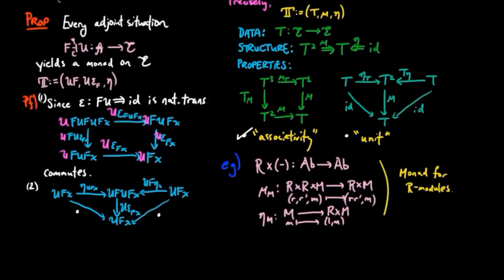And in fact, they do. And it comes from the triangle identities for the adjoint situation. For the left triangle, we have U epsilon FX precomposed by UF FX. And that is just straightforward from the definition of the triangle identity for the adjoint situation.